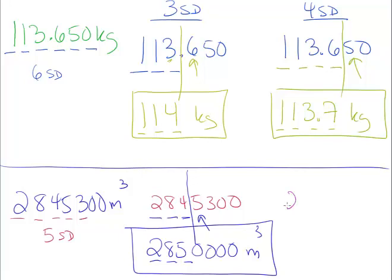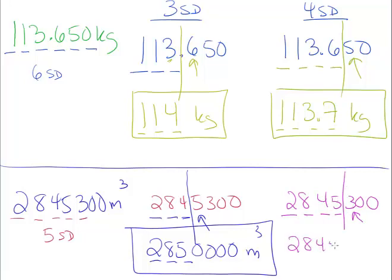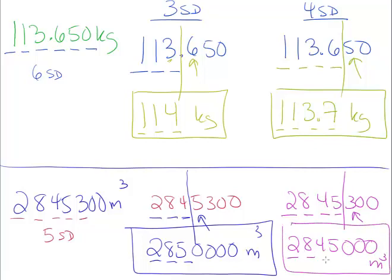Rounding 2,845,300 to four significant digits: we keep 1, 2, 3, 4 and focus on the next digit, which is 3. Since 3 is less than 5, the fourth digit remains as 5. Don't forget the place value so we don't change the magnitude. Our answer is 2,845,000 cubic meters — rounded to four significant digits.